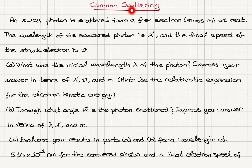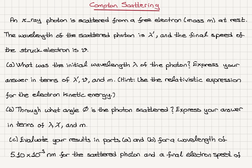Compton Scattering. An X-ray photon is scattered from a free electron of mass m at rest. The wavelength of the scattered photon is lambda prime and the final speed of the struck electron is v. Part A: What was the initial wavelength lambda of the photon? Express your answer in terms of lambda prime, v, and m, and as a hint use the relativistic expression for the electron kinetic energy.